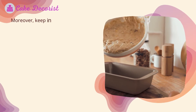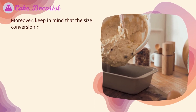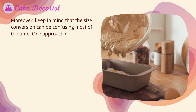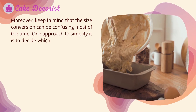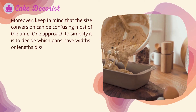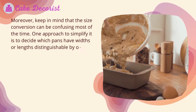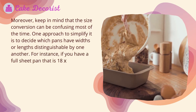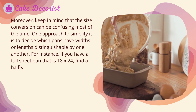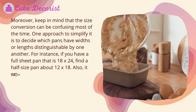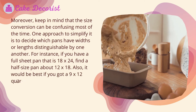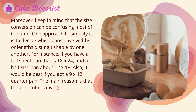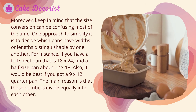Keep in mind that size conversion can be confusing. One approach to simplify it is to decide which pans have widths or lengths divisible by one another. For instance, if you have a full sheet pan that is 18 by 24, find a half size pan about 12 by 18, and also a 9 by 12 quarter pan. The main reason is that those numbers divide equally into each other.